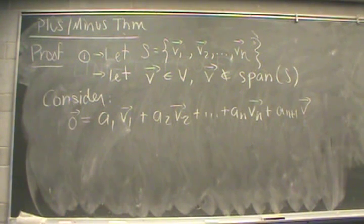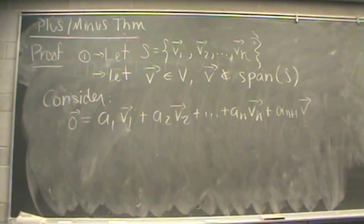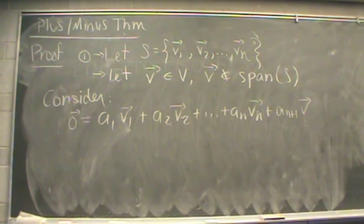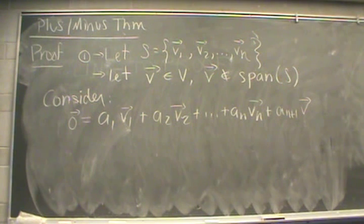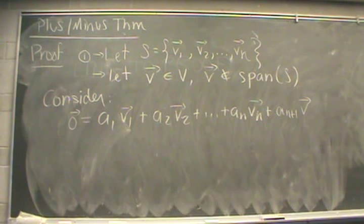Let's take a look at the proof of the plus-minus theorem. To prove part one, we're going to start by writing out the linearly independent set S, consisting of vectors V1 all the way up to Vn. Next, we take a vector V that's inside our vector space, but V satisfies the property that it is not inside the span of these vectors in S.